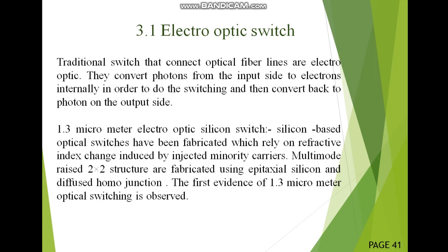Traditional switches that connect optical fiber lines at Electro-Optics convert photons from the input side to electrons internally in order to perform switching, and then convert back to photons on the output side. Here we use different micrometer ranges. 1.3 micrometer Electro-Optic silicon-based optical switches have been fabricated, relying on refractive index change induced by injecting minority carriers. Multimode 2x2 structures are fabricated using epitaxial silicon and diffused homojunction. The first evidence of 1.3 micrometer optical switching is observed.